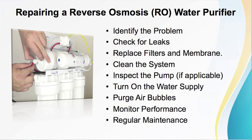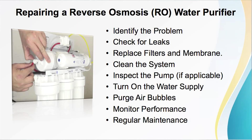As before, step one is identify the problem — determine the specific issue with the RO unit. Common problems include low water production, unusual taste or odor, and noise. Next step: check for leaks. Inspect the RO system for any visible leaks, both in the unit itself and along the tubing and connections. Replace any damaged or worn-out tubing, fittings, or O-rings. Tighten loose connections with a wrench.